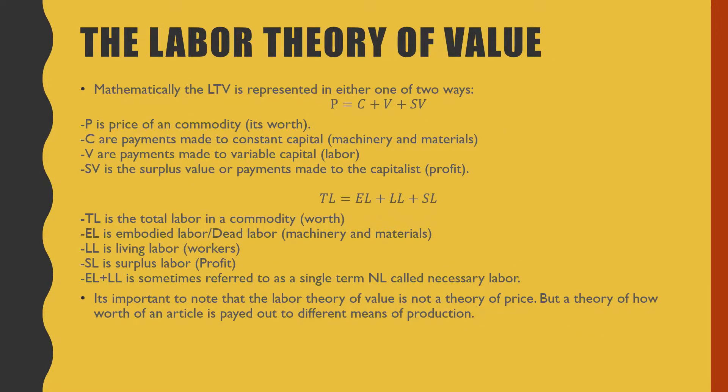Mathematically, the labor theory of value can be represented in one of two ways. The first way is P = C + V + SV, where P is the price of a commodity, its worth. C are the payments made to constant capital, meaning machinery. V are the payments made to labor or variable capital. SV is surplus value, or payments made to the capitalists, which is profit.